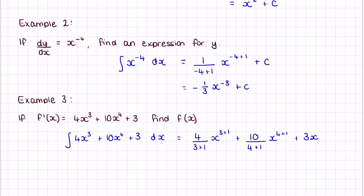Simplifying: 4 over 4 is just 1, so we get x to the power of 4, plus 2x to the power of 5, plus 3x, and then we need to remember our plus c.